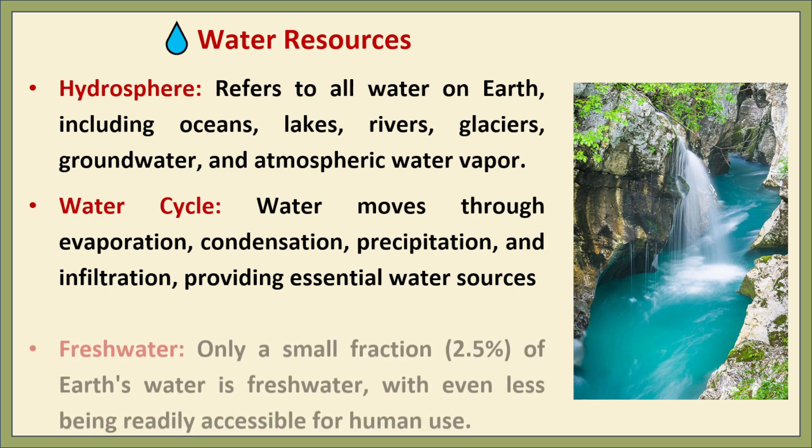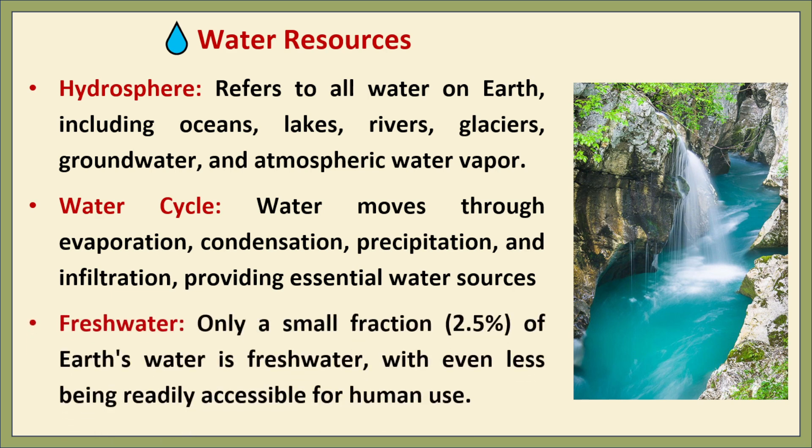But here is a shocking fact: only 2.5% of earth's water is fresh water, and much of it is locked in glaciers or underground. That means only a tiny fraction — about 1% — is easily accessible for drinking, farming and industry.